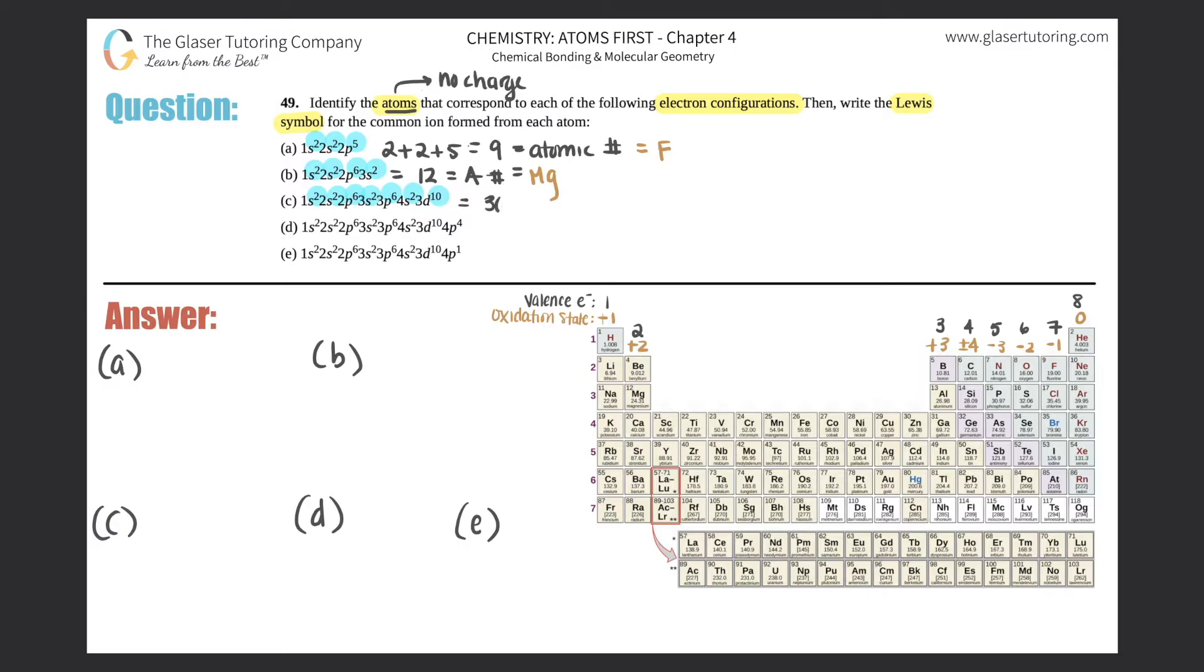And that is our atomic number. I'm just going to put a number. So now we scan for number 30 on the periodic table. Number 30 is zinc, Zn.